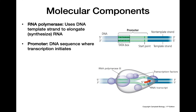Next we have our promoter. The promoter is the DNA sequence where the RNA polymerase actually binds and where transcription is going to start. Something found within promoters that RNA polymerase uses to help identify where the promoter is, is a sequence of nucleotides called the TATA box. This is an important structure for RNA polymerase to recognize where the promoter is.